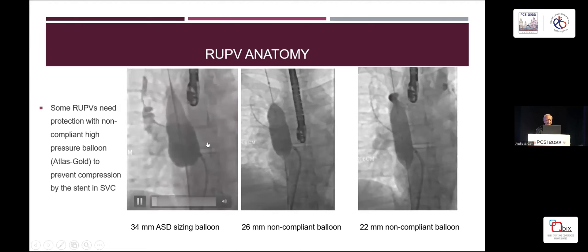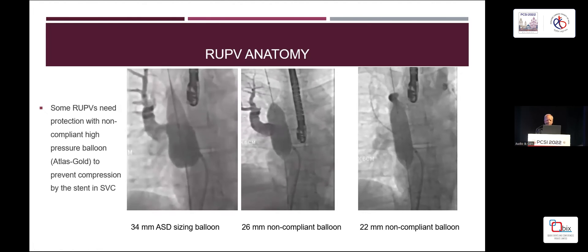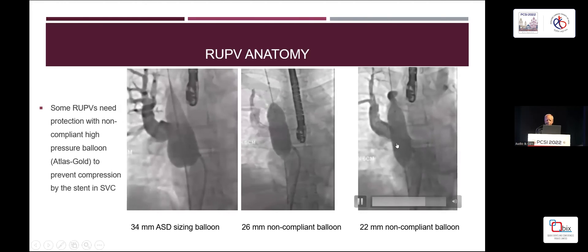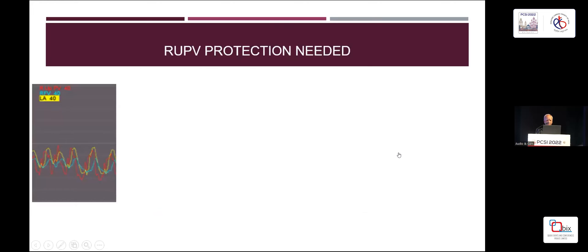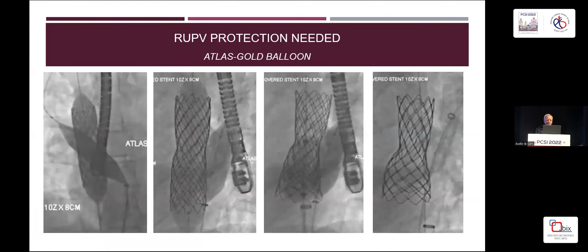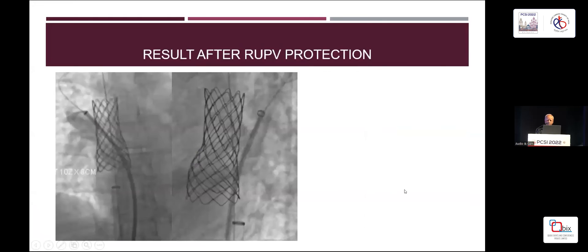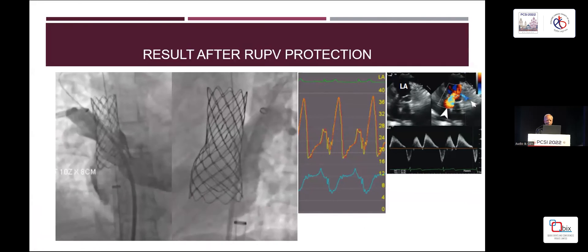Here's one with balloon interrogation showing holdup of contrast with the sizing balloon. We then tried a non-compliant balloon, and that still showed some holdup at 26 millimetres. With a 22 millimetre non-compliant balloon there is no holdup of contrast, but there's residual shunting. If you oversize the stent, there will be a gradient. So you have to decide on protecting that right upper pulmonary vein. Here we've got an atlas balloon in the right upper pulmonary vein on the lateral projection, and inflating the covered CP stent produces an indentation — that allows the pulmonary vein to be protected. There's a tiny residual shunt on the angiogram afterwards, which can be resolved by flaring a little more.